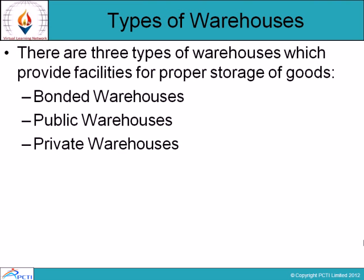There are three types of warehouses: bonded, public, and private. Bonded warehouses are located near ports where imported goods are stored until importers complete all customs formalities and take delivery. Public warehouses are made for manufacturers, producers, and traders, and are located on favourable sites like railway routes, highways, and ports. Private warehouses are owned by large manufacturers and wholesalers themselves, and their maintenance is the responsibility of the owners.